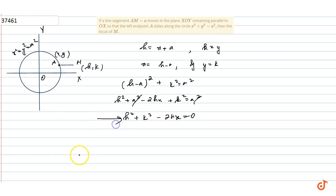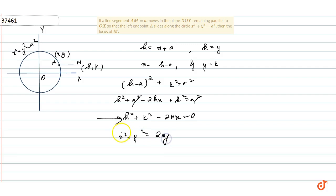Therefore, the locus of point M is x² + y² = 2ax, since h and k represent the coordinates of M. This is the answer to the question.